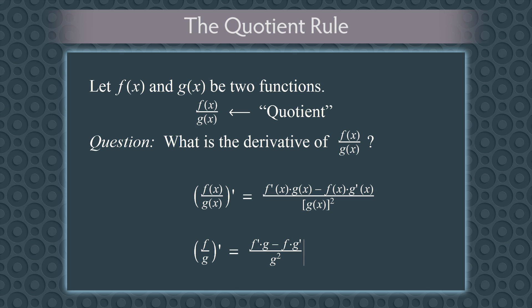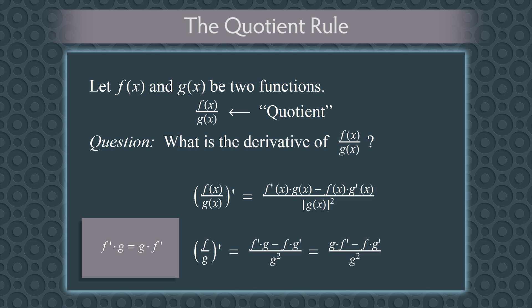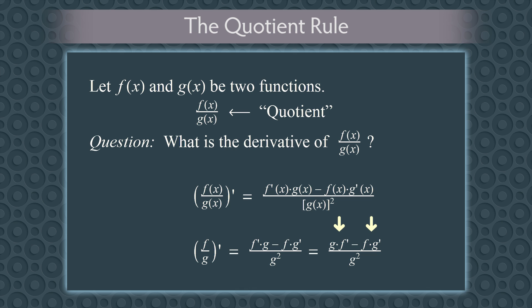Sometimes people write this a little differently — as g times f prime minus f times g prime, all over g squared. These two expressions are the same because f prime times g equals g times f prime. The order in which you multiply doesn't matter; we call this the commutative property. Some people like putting the derivatives at the end of each term, while others like keeping f and g in the same order. The important thing is that the minus sign must come before the term f times g prime.